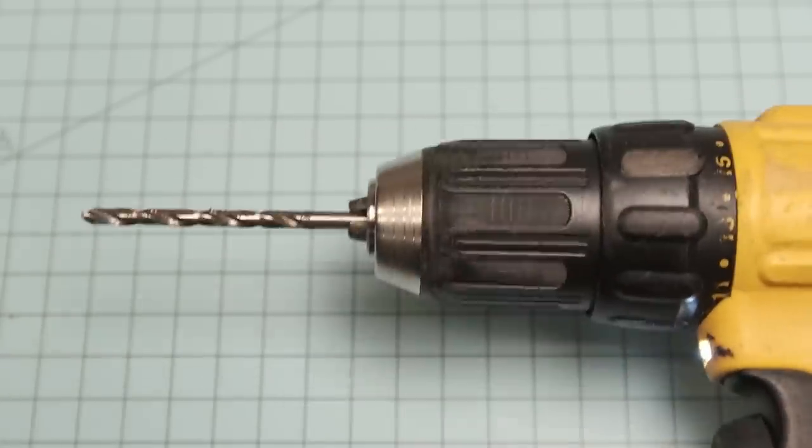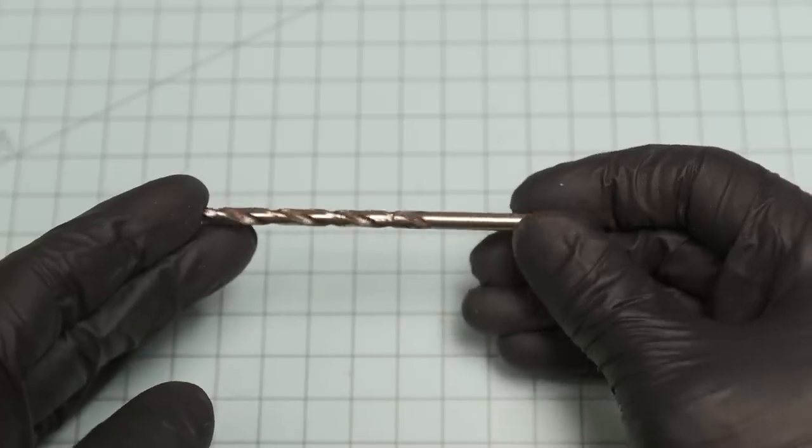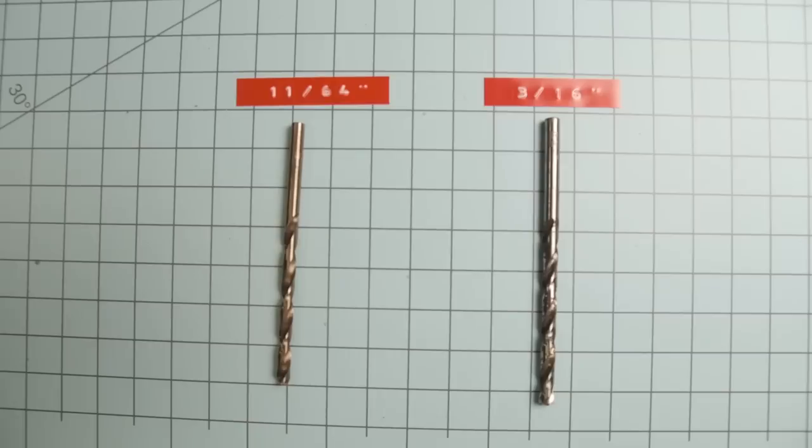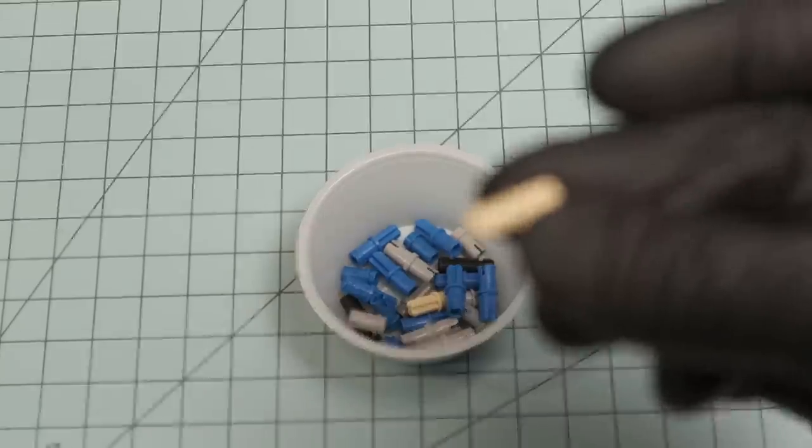You will need you a drill. You ain't even got to have a drill. You could just use your hands and turn it like that. I got me a little 3/16 and 11/64. You're going to need you some Lego pieces. Specifically, these little pegs right there.